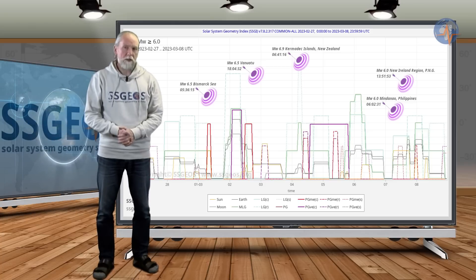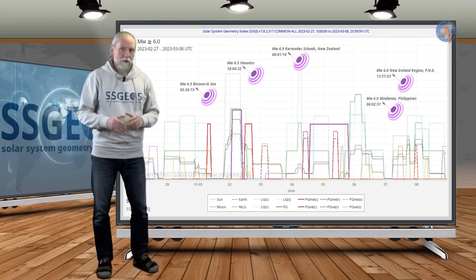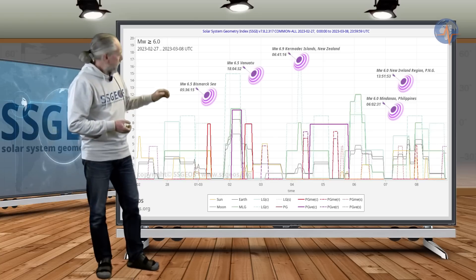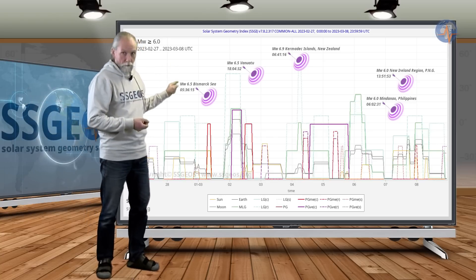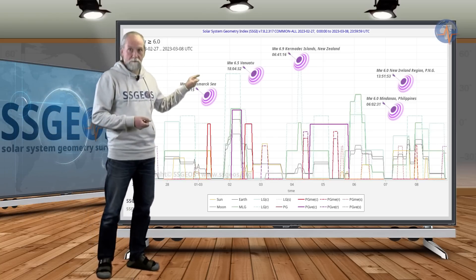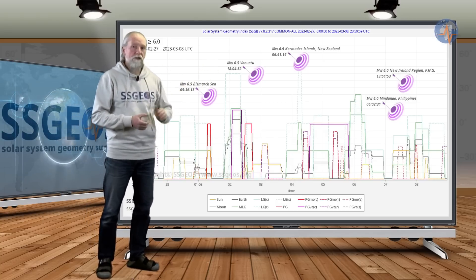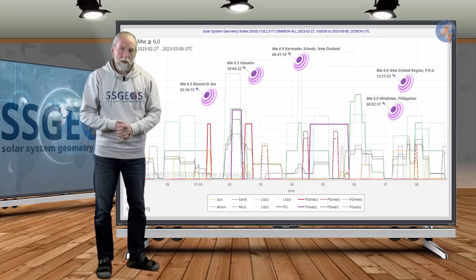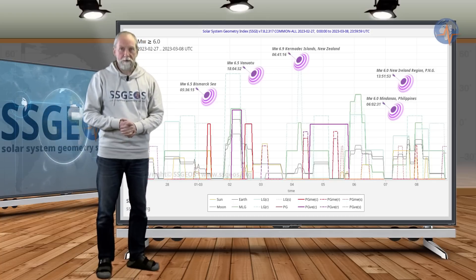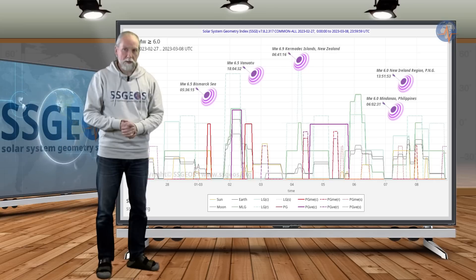If you look at the actual seismic activity that occurred at the time of the critical planetary geometry, we see a 6.5 on the first and also on the second of March, followed by a magnitude 6.9 on the fourth, and that was the largest seismic event since the major earthquakes in Turkey last month.